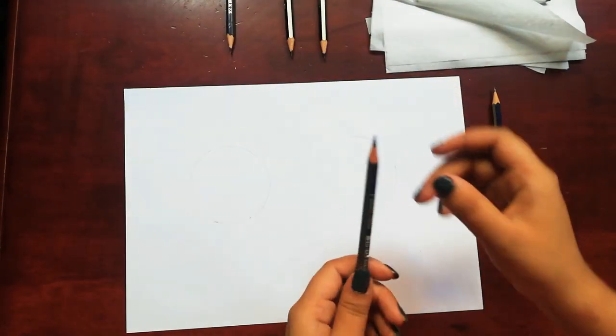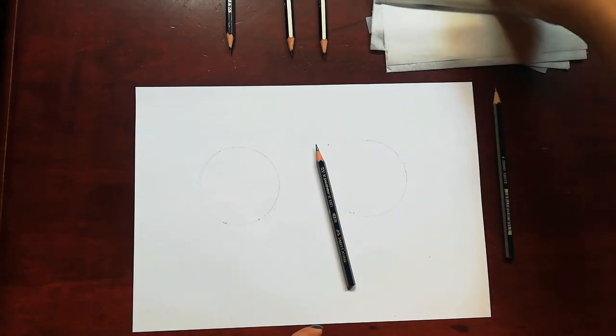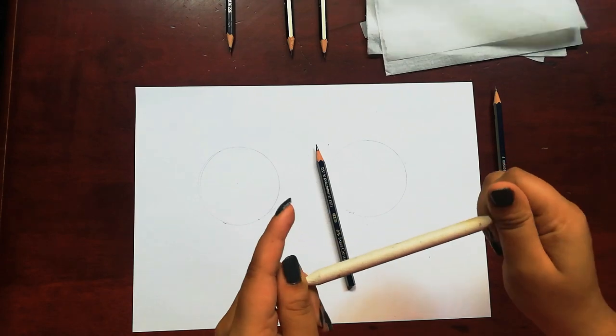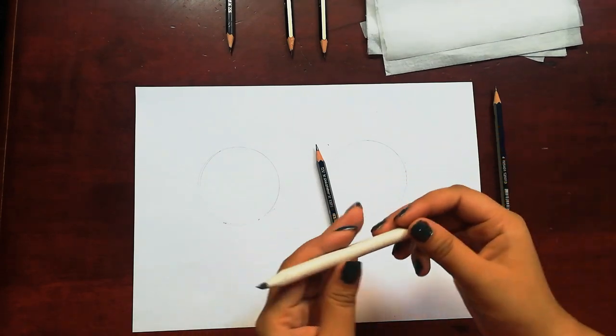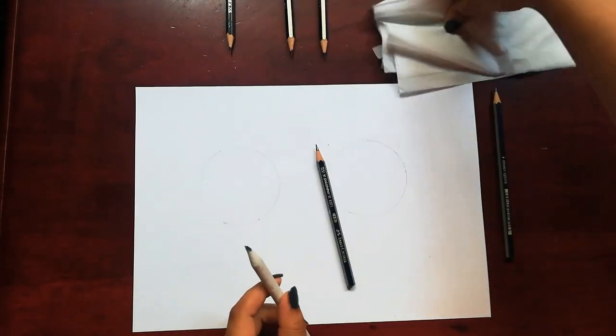I'm going to use Castor shading pencils for my shading, and for blending I'm going to use a blending stump and also tissue paper. I'll show you the difference first.